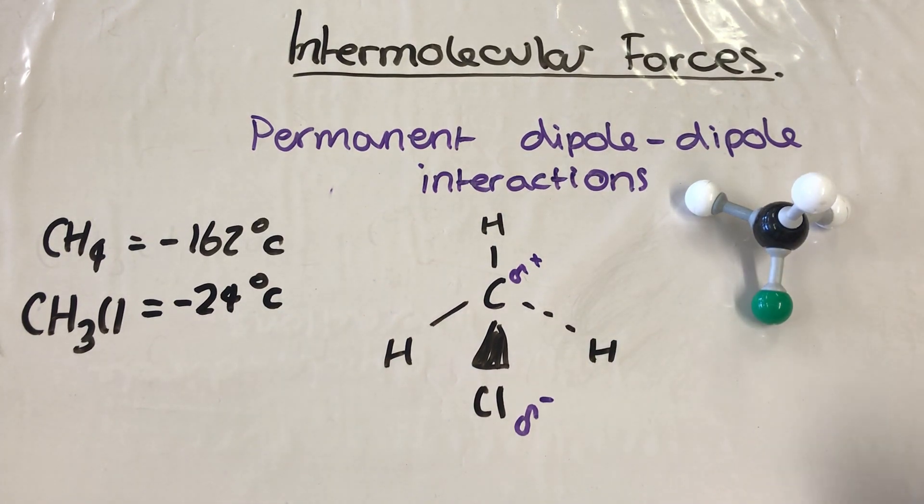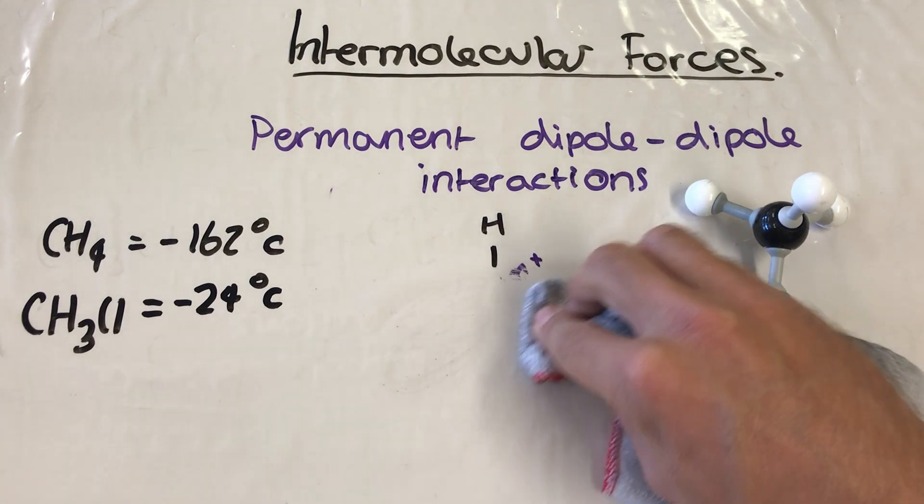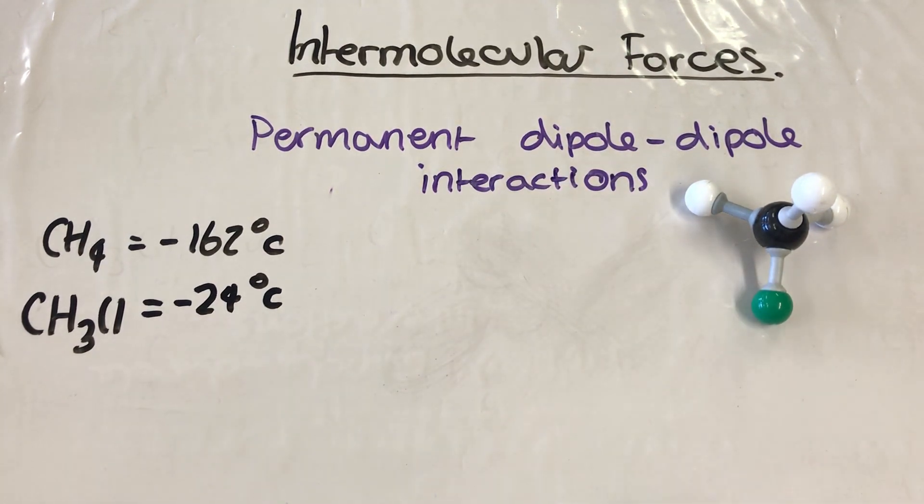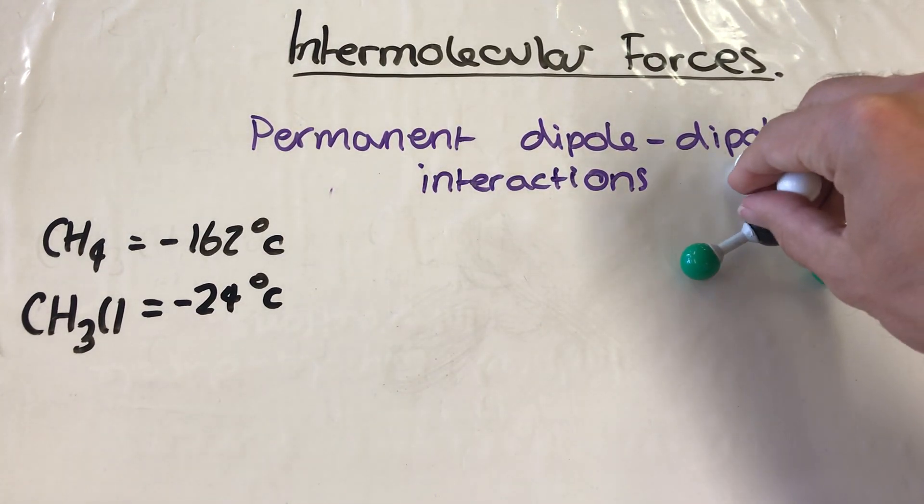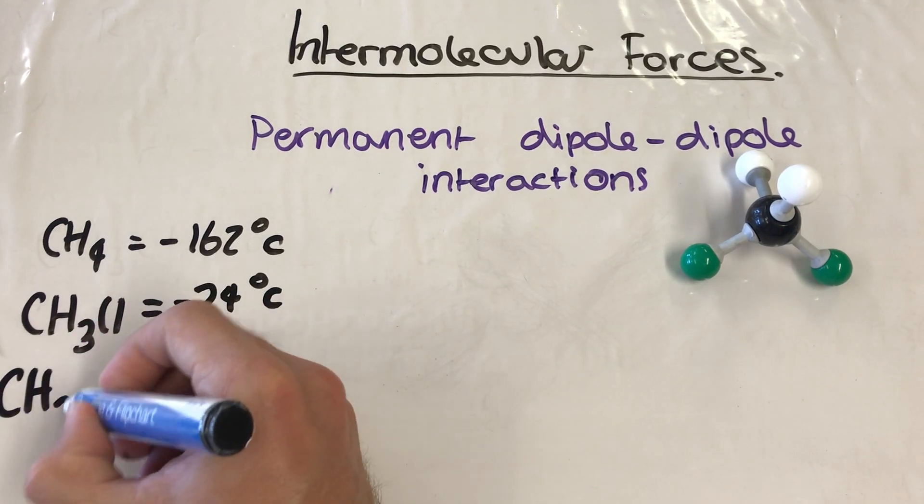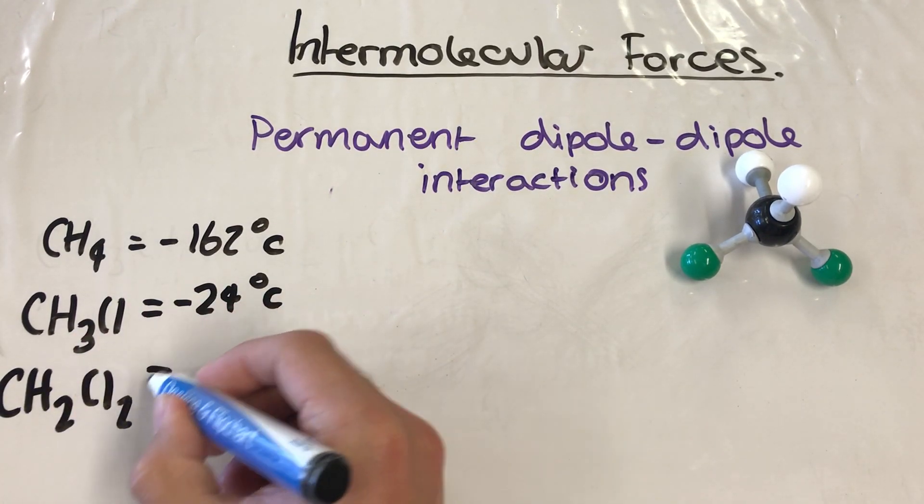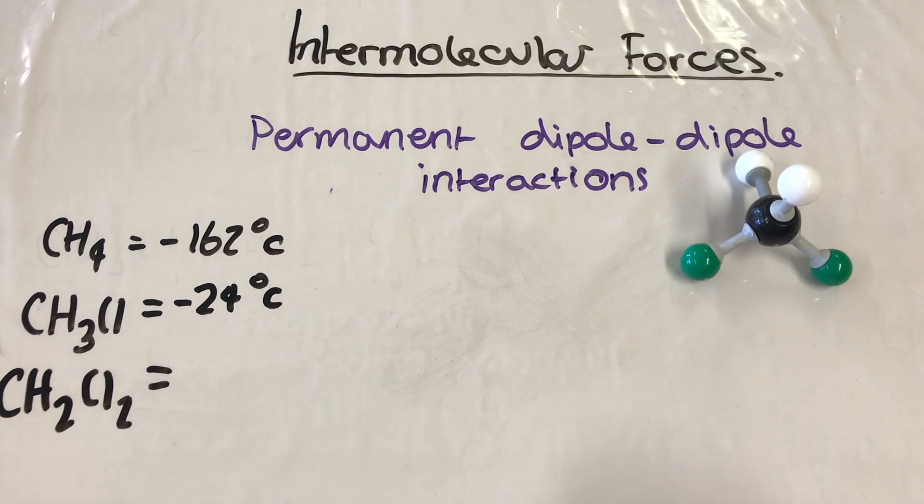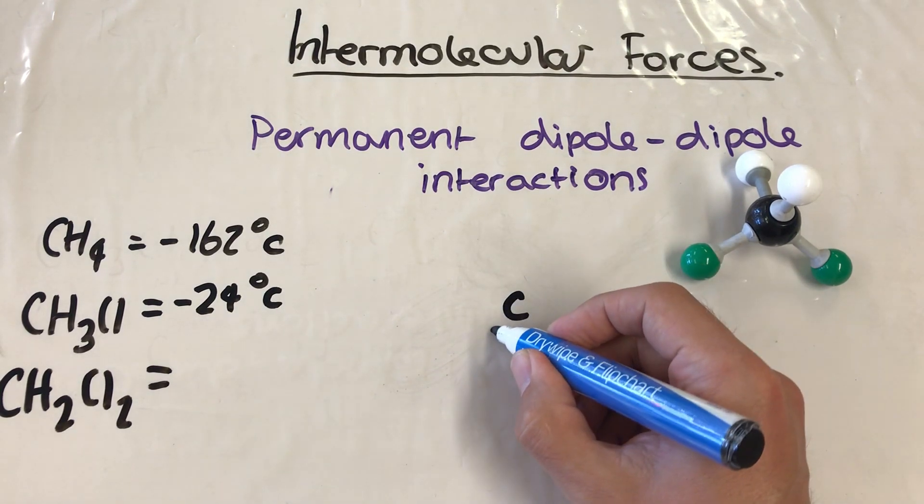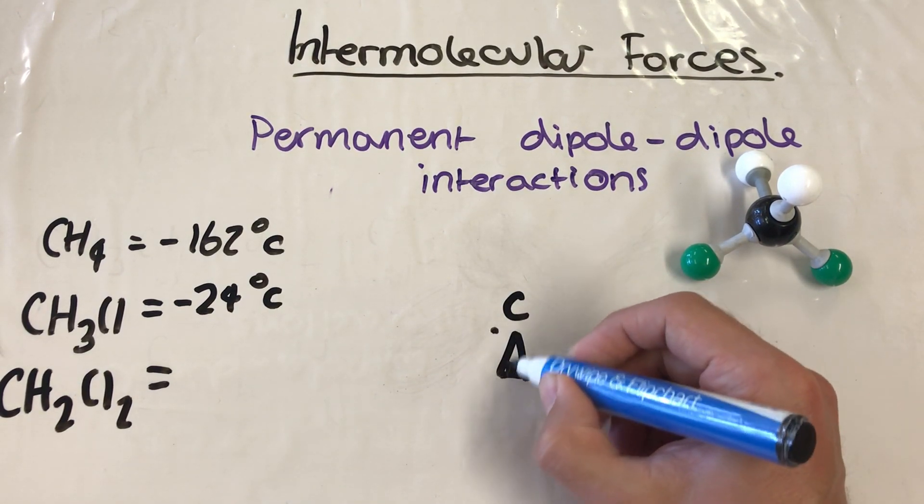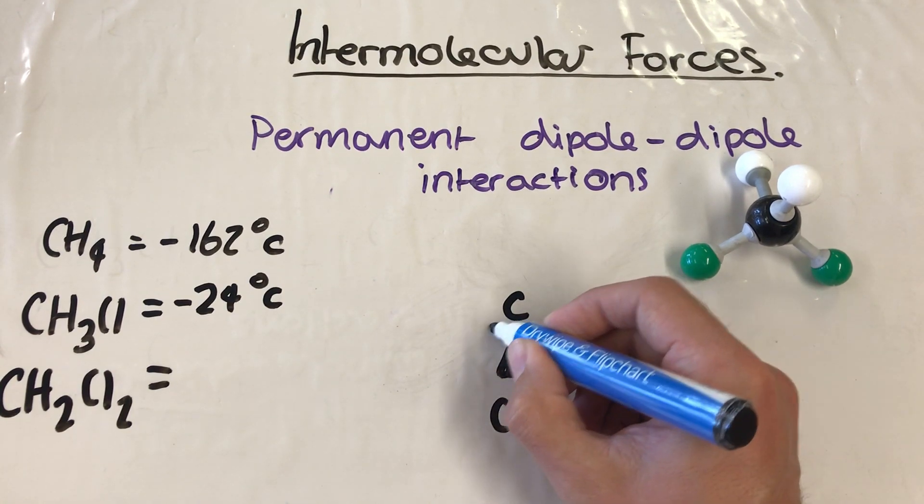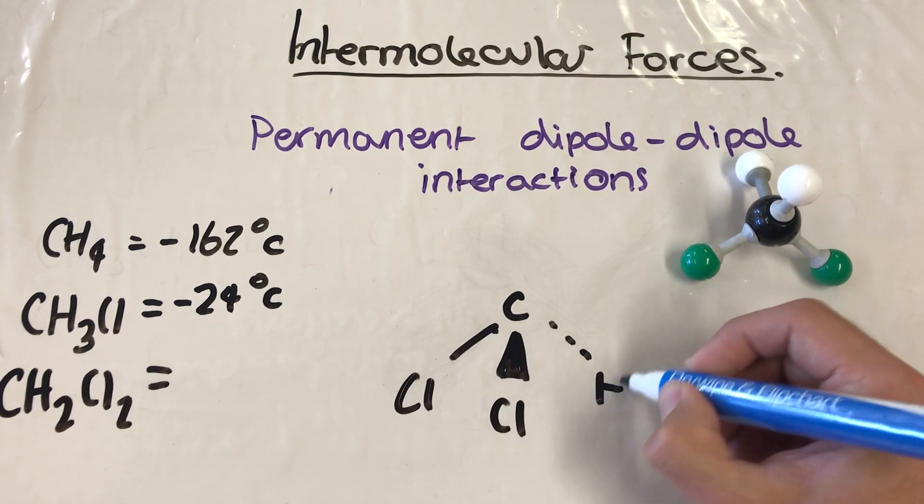If we move on, we can look at the next example, which is dichloromethane. If we have a look at dichloromethane now, we have CH2Cl2. Here we have two chlorines, and we have two hydrogens.